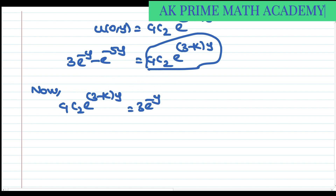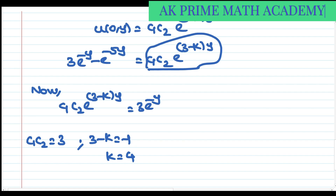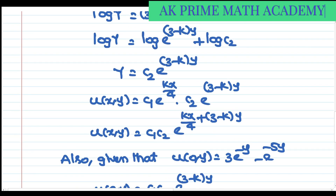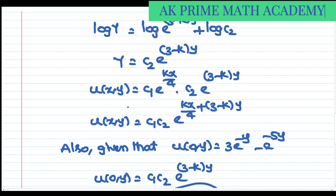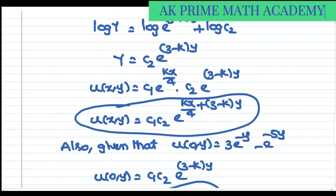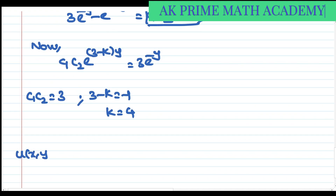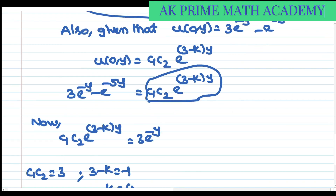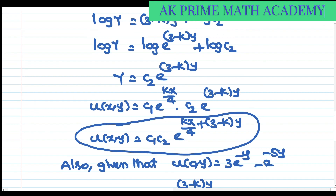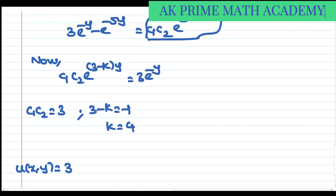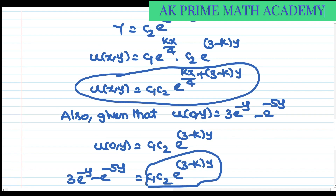Now substitute k = 4 and c1·c2 = 3 into the general solution. u(x, y) = c1·c2 · e^(kx/4 + (3−k)y). With c1·c2 = 3 and k = 4: e^(kx/4) = e^(4x/4) = e^x, and (3−k) = 3−4 = −1, so u(x, y) = 3·e^(x − y). This is the required solution.